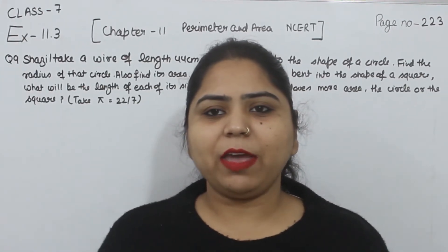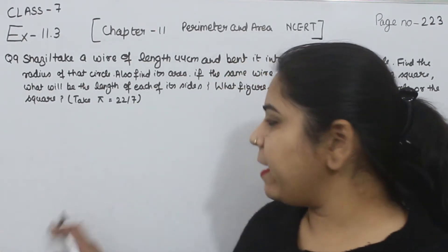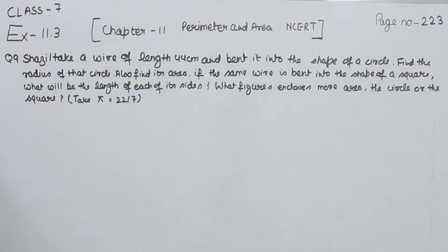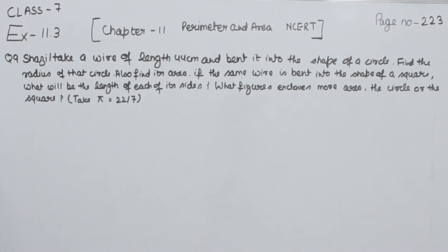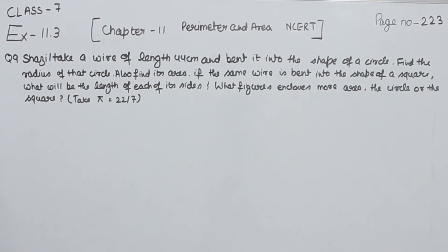Hello everyone, this is Preeti. We are here with another question of exercise 11.3, page number 223, question number 9. Take a wire of length 44 cm and bend it into the shape of a circle. Find the radius of that circle, also find its area. If the same wire is bent into the shape of a square, what will be the length of each of its sides? What figure encloses more area, the circle or the square?